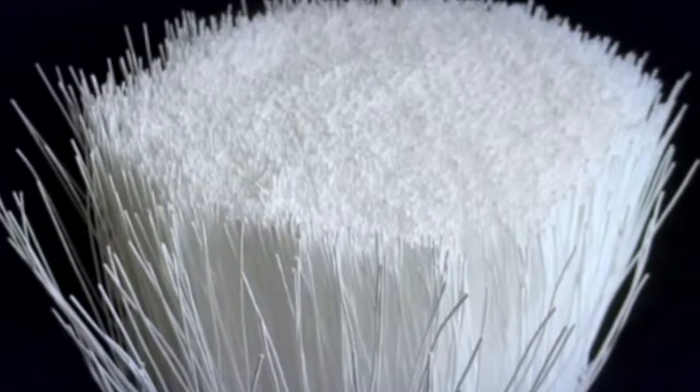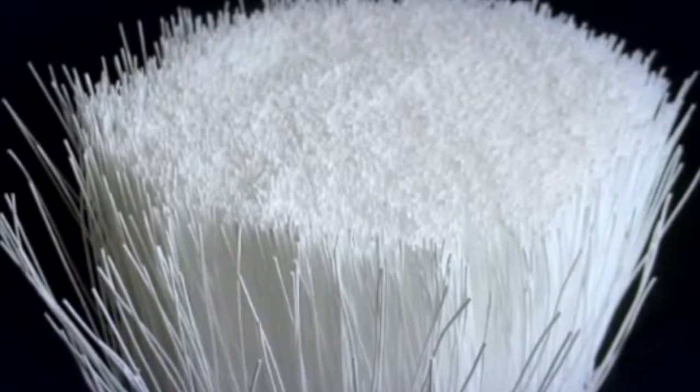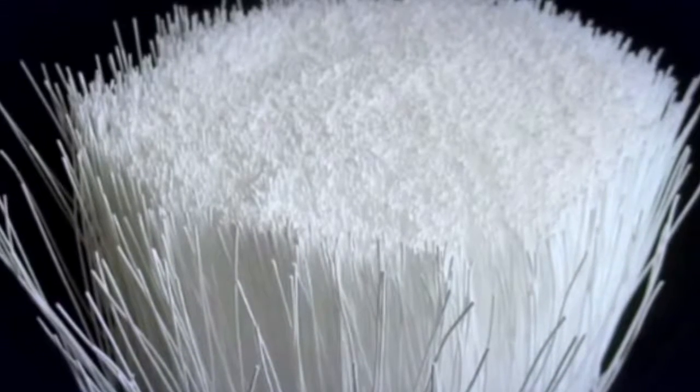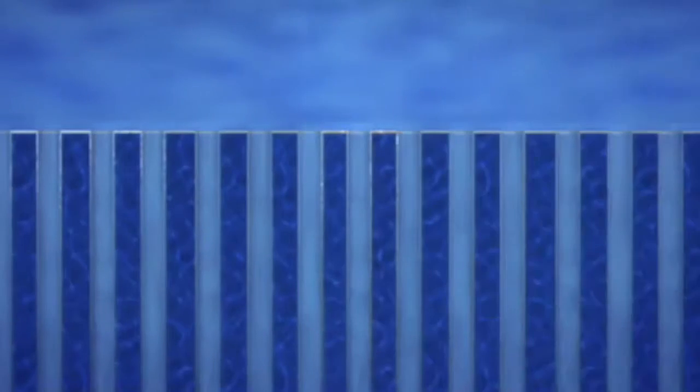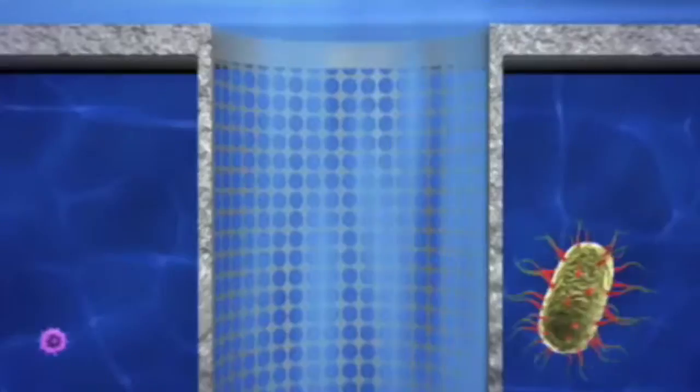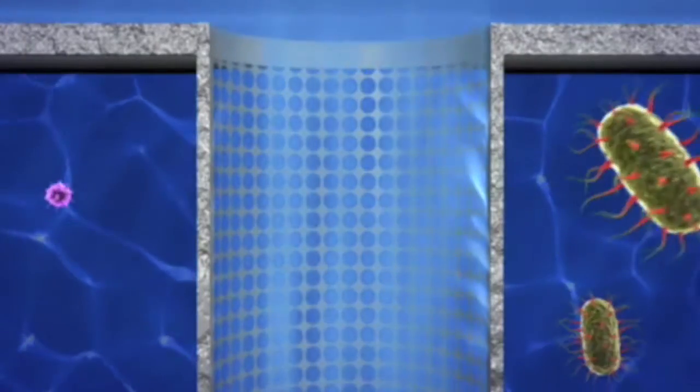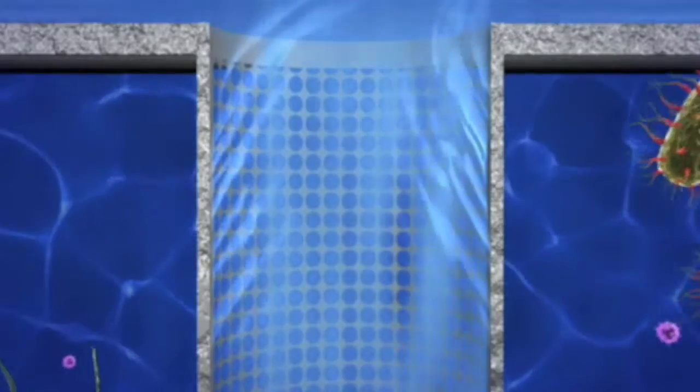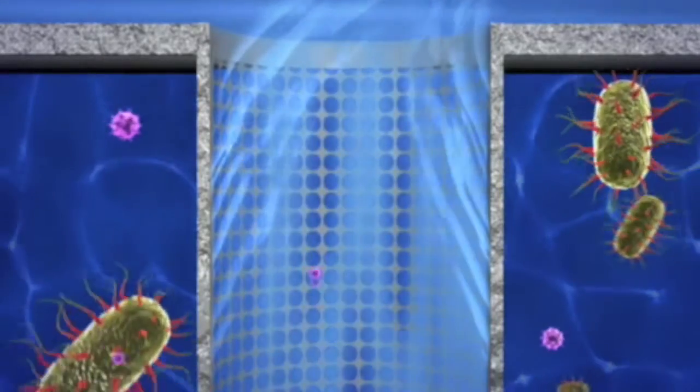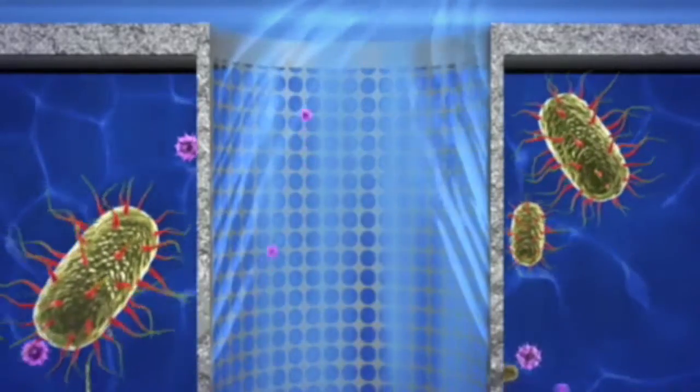The outer wall of each fiber is made up of tiny pores only 0.4 microns in size, about 300 times smaller than the width of a human hair. The fibers filter out microscopic particles such as silt, protozoan cysts, bacteria, and even viruses.